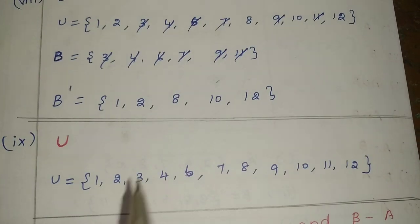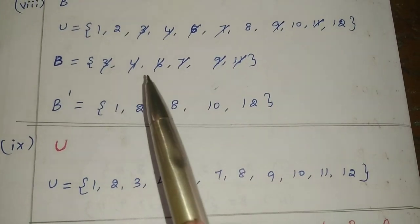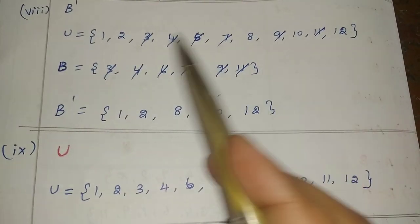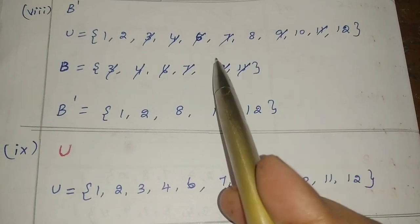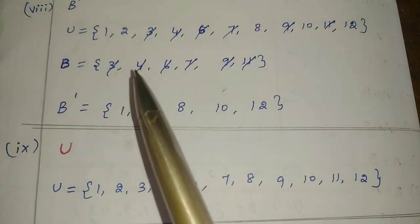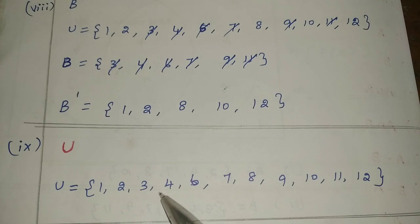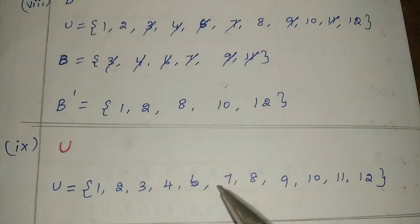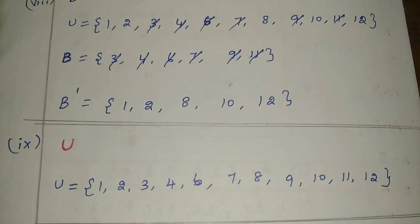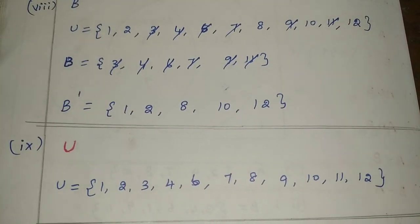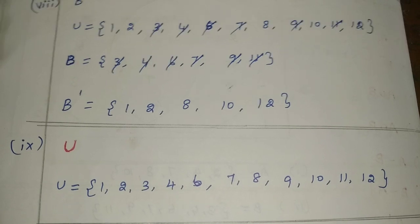Finally, the universal set. A dash and B dash. The universal set values are: 1, 2, 3, 4, 6, 7, 8, 9, 10, 11, 12. Thank you.